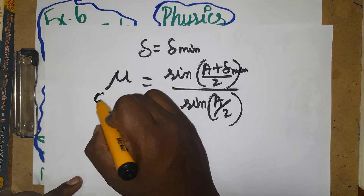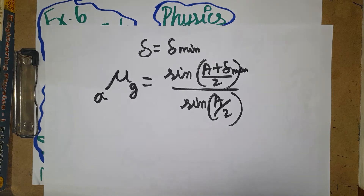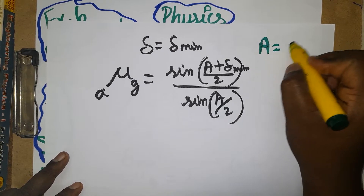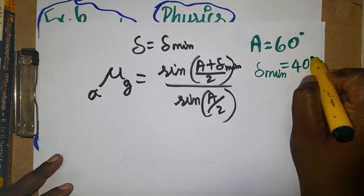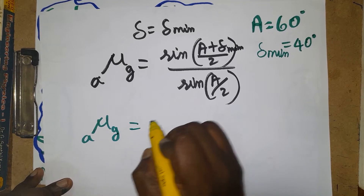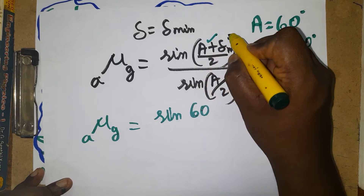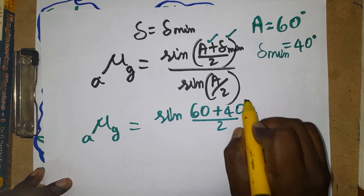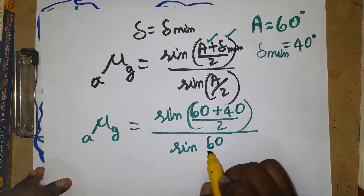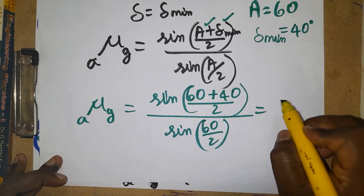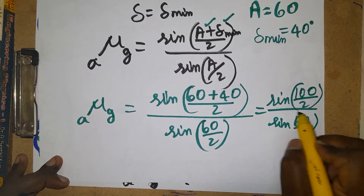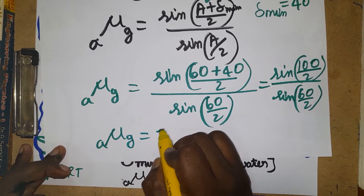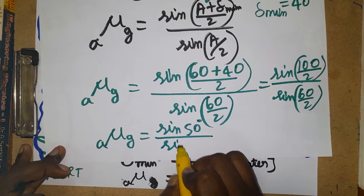In this question, light is traveling from air to glass. The angle of the prism A = 60°, and the angle of minimum deviation δ = 40°. Substituting: μ(air to glass) = sin((60 + 40)/2) divided by sin(60/2) = sin(100/2) divided by sin(30°) = sin(50°) divided by sin(30°).